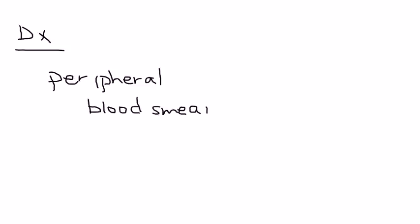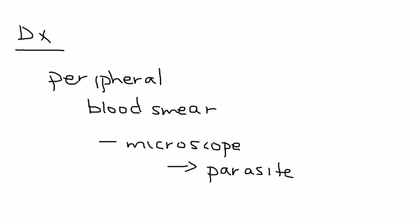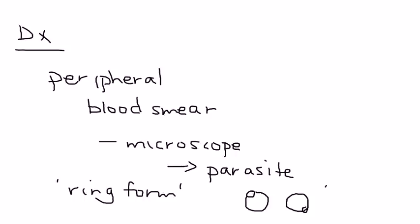With the peripheral blood smear, you look under a microscope at the blood cells and you will see a very classic finding — you are looking for the parasite, which is described as a ring form. On the peripheral blood smear, you see areas that look like rings, a ring-like shape.